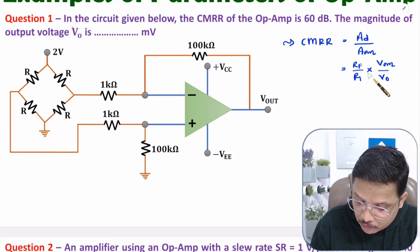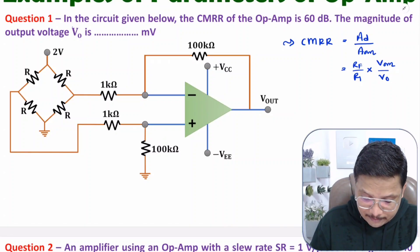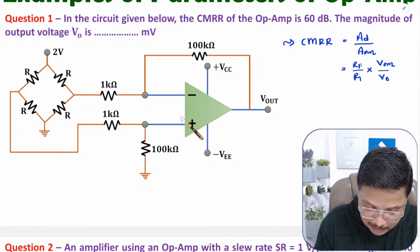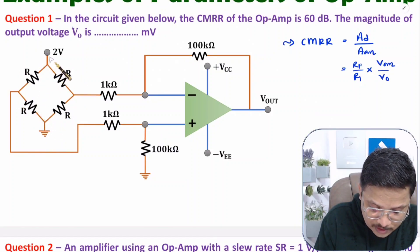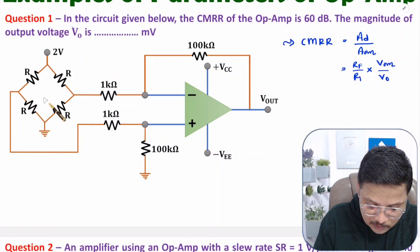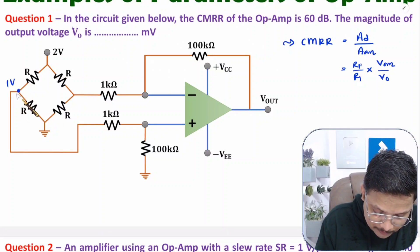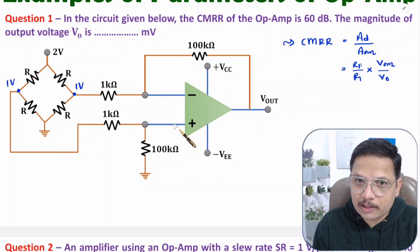CMRR and Rf/R1 are given; we need to find Vcm, the common mode voltage. Common mode voltage is the voltage given at the two input terminals, applied using this bridge circuit. Since we have a balanced bridge, the voltage at one terminal is 1 volt and at the other terminal is also 1 volt — so the common mode voltage at both terminals is 1 volt.